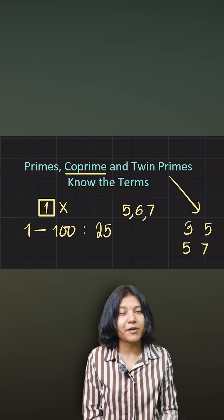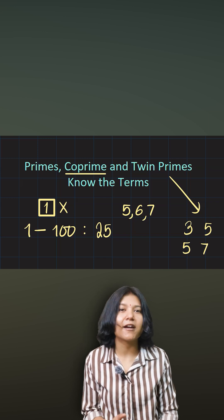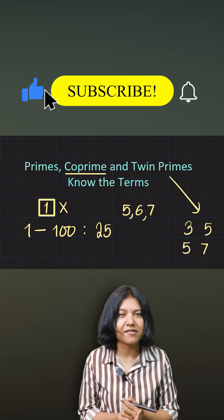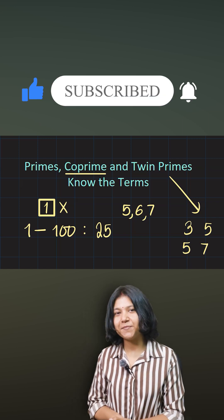If you ever have to deal with a question that talks about finding twin primes, then there are exactly eight twin primes between one to two hundred. I hope you will remember that.